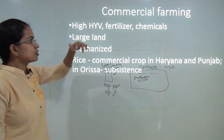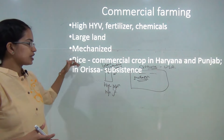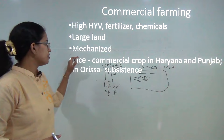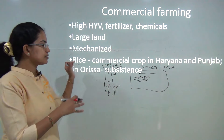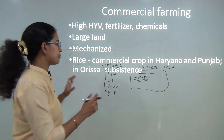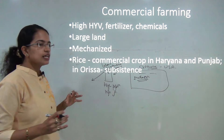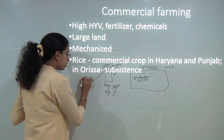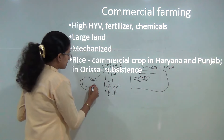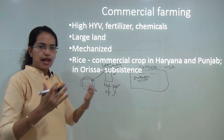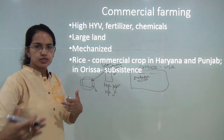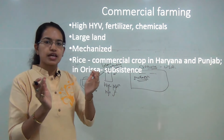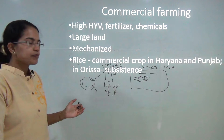Extensive farming is also known as commercial farming. For example, rice is practiced as a commercial crop in Haryana and Punjab, but in parts of Odisha the same crop is practiced as subsistence. Subsistence farming means you are growing enough to meet the needs of your family and peer group — you are not producing for export, just satisfying local needs.